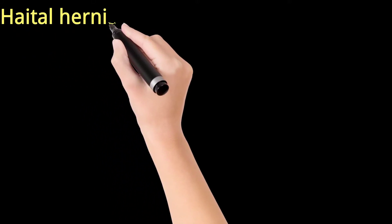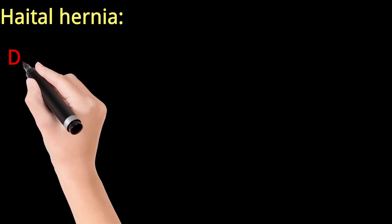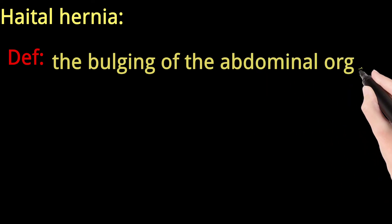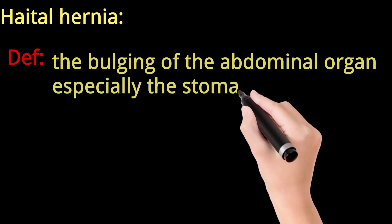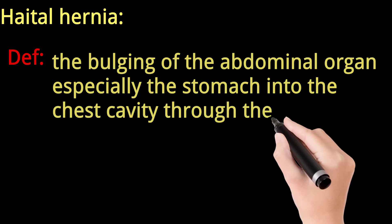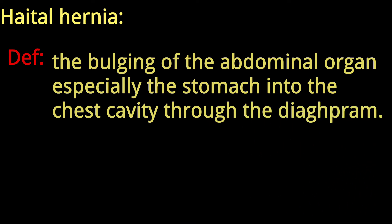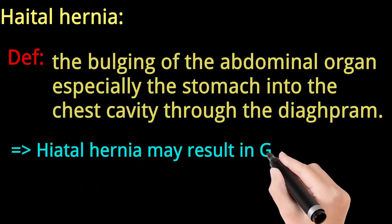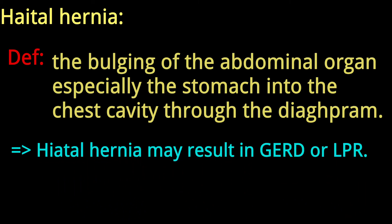Assalamu alaikum friends. Today I'm going to talk about the hiatal hernia. We know that there are three openings in the diaphragm. One opening is for the passage of the esophagus from the chest cavity into the abdomen; this opening is called the esophageal hiatus. When the stomach bulges into the chest cavity through the esophageal hiatus, this condition is called hiatal hernia.